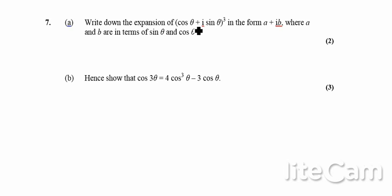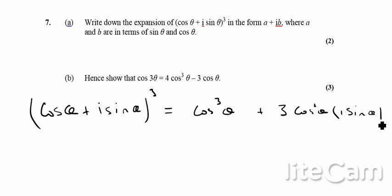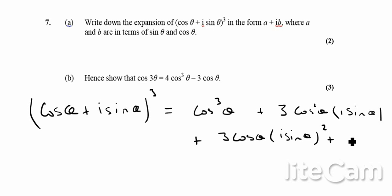In terms of the expansion, we should notice that this looks a bit like a binomial expansion, so we can probably save ourselves a little bit of time by actually using the binomial expansion. That gives us cos³θ + 3cos²θ · i sinθ + 3cosθ · (i sinθ)² + (i sinθ)³.